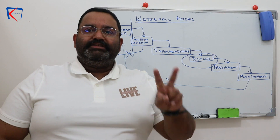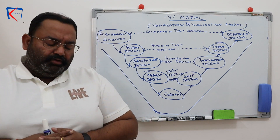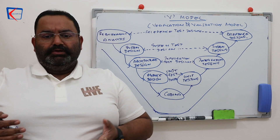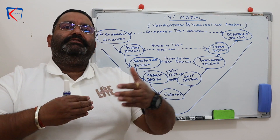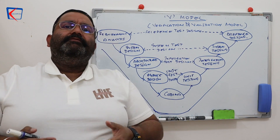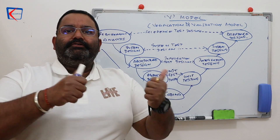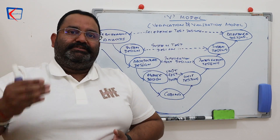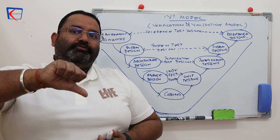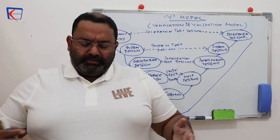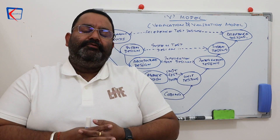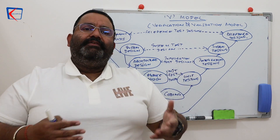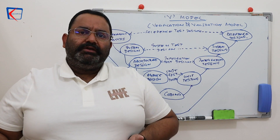The next model is called the V model, also known as the Verification and Validation model. Verification is the way in which we check whether something is right or wrong. Validation is when we actually test it and check whether the output generated is right or wrong. For example, if you are creating a module to check username and password, verification tells how we are going to check whether the system is working correctly.